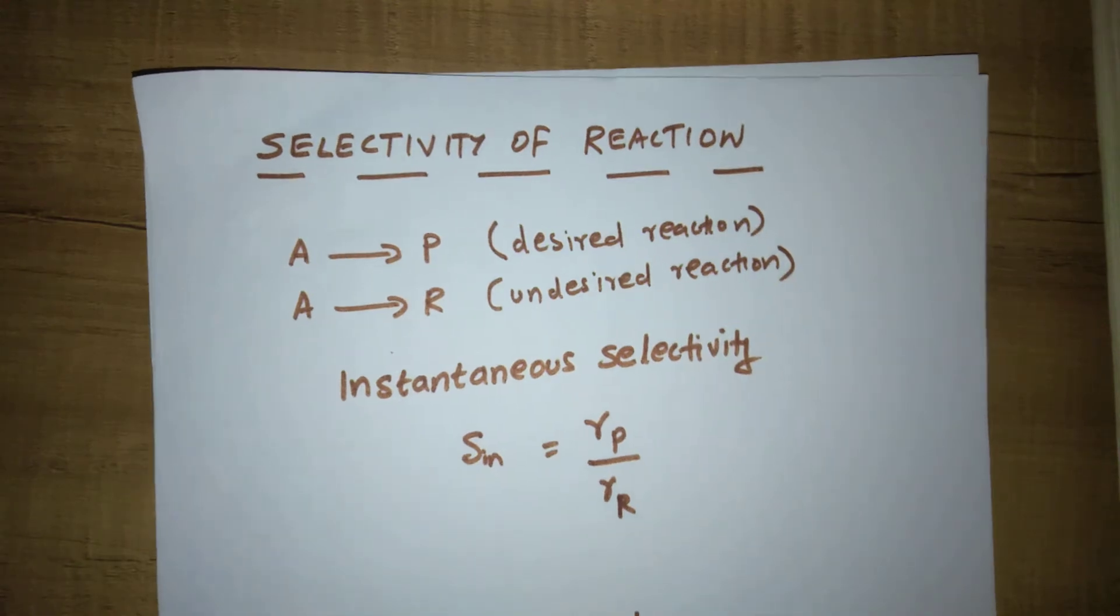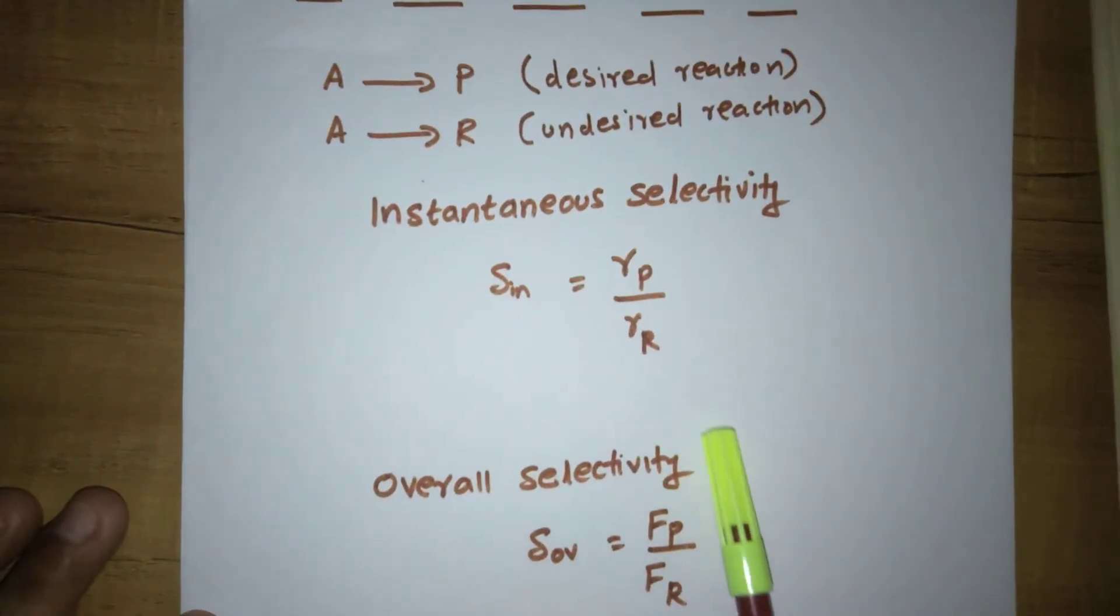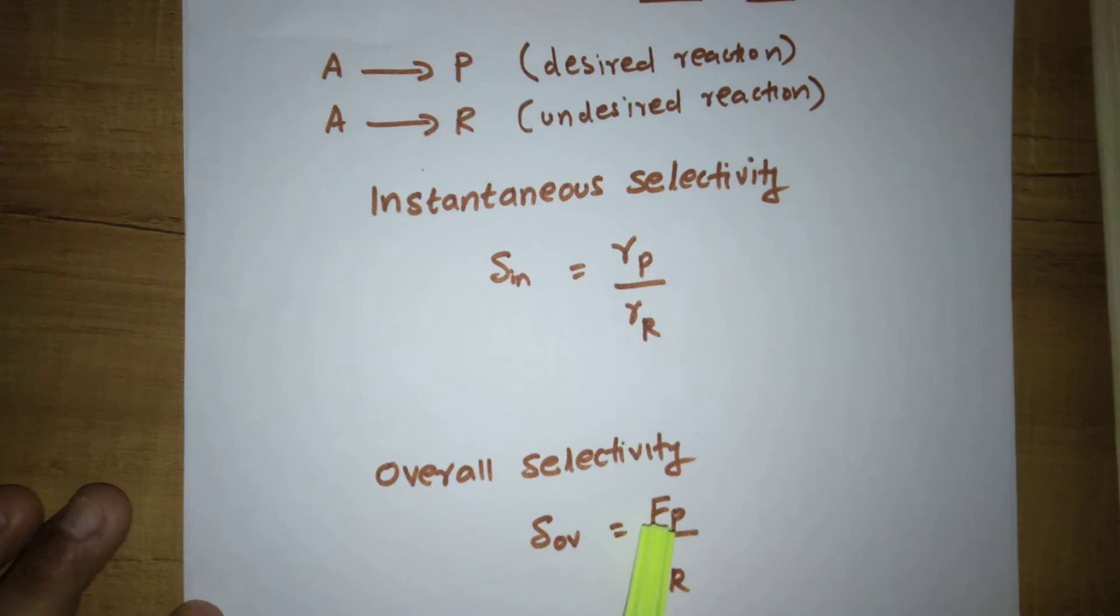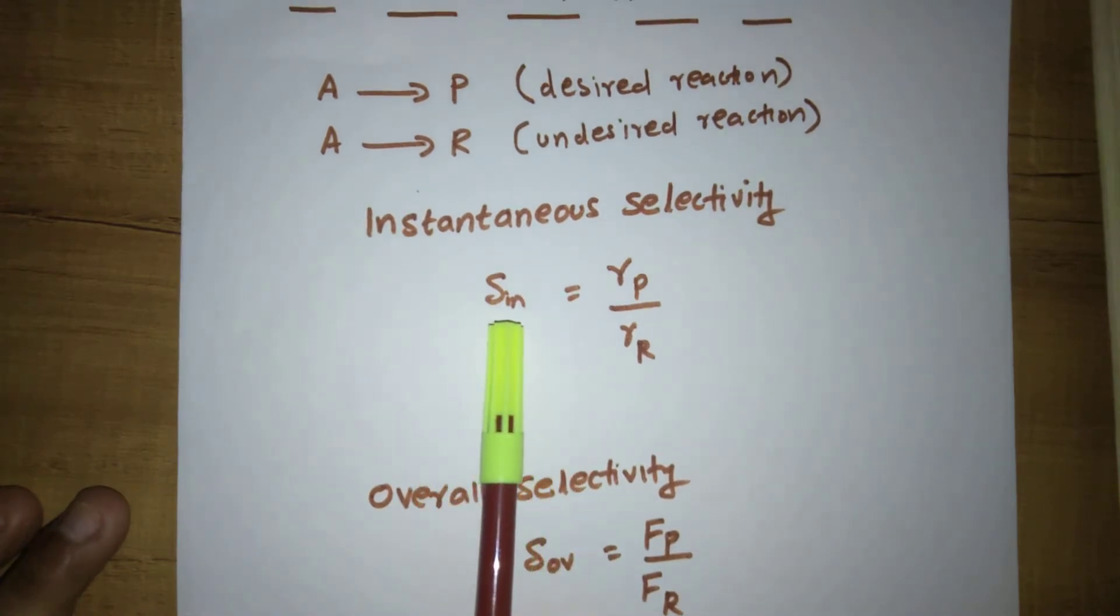What is selectivity? Selectivity can be expressed in two ways: instantaneous selectivity and overall selectivity. What is instantaneous selectivity? S_in, instantaneous selectivity equals r_P by r_R.